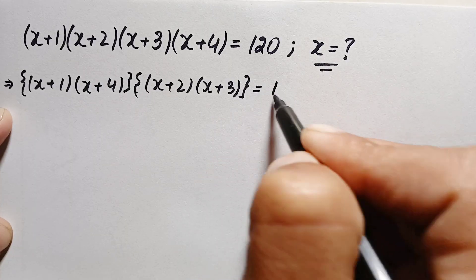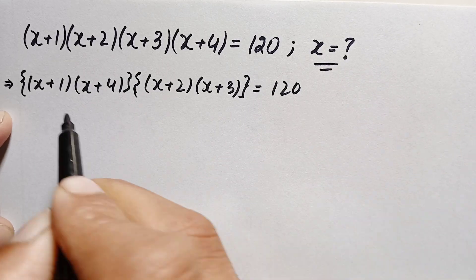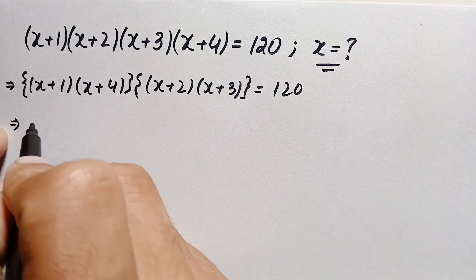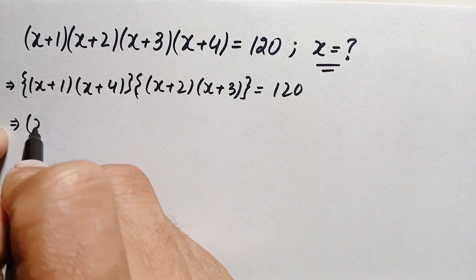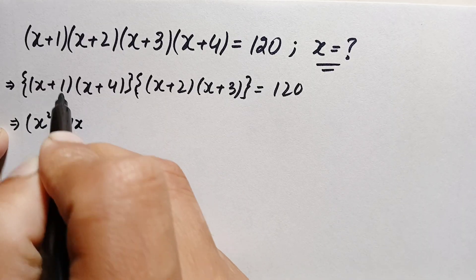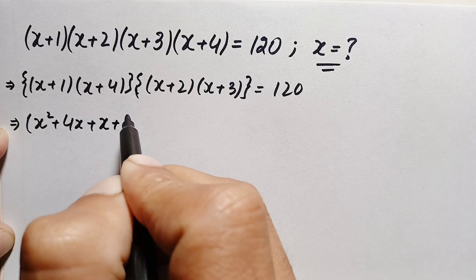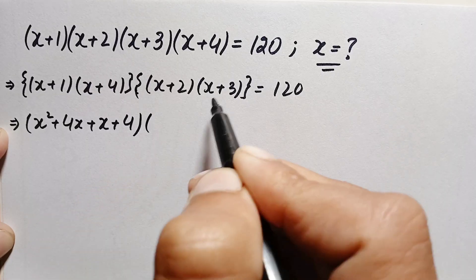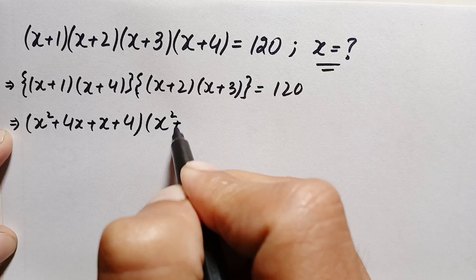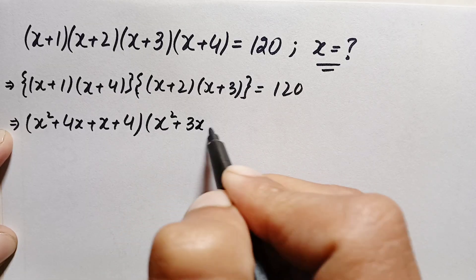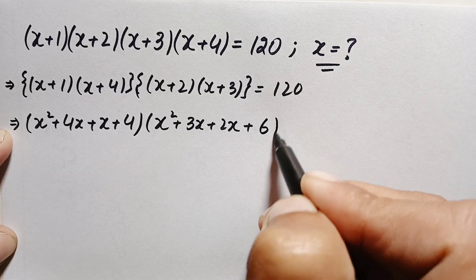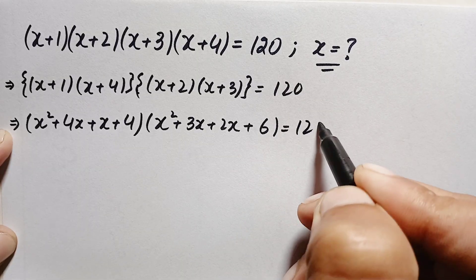Now let's multiply the expressions inside each pair. (x+1)(x+4) becomes x²+4x+x+4 = x²+5x+4, and (x+2)(x+3) becomes x²+3x+2x+6 = x²+5x+6. This equals 120.